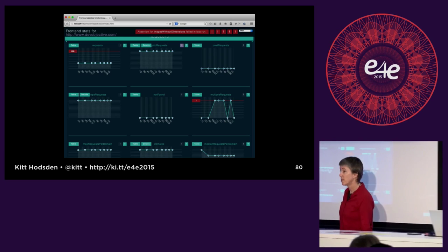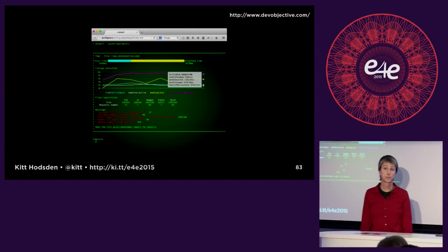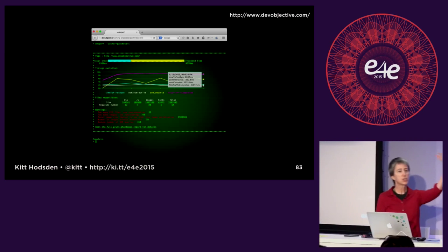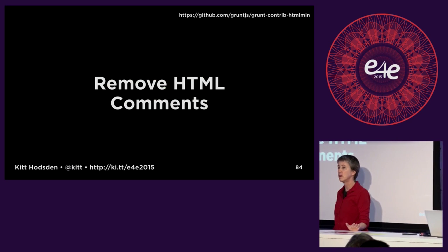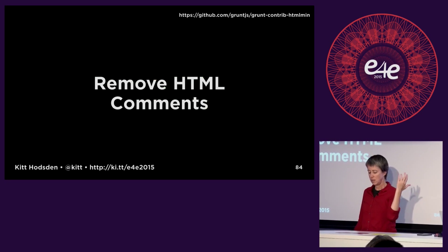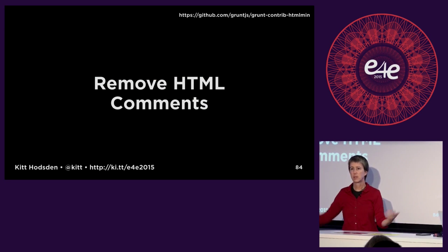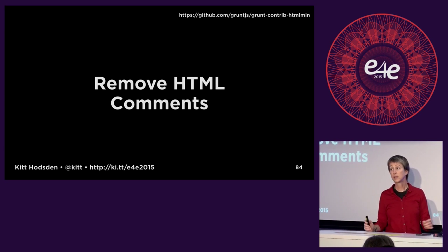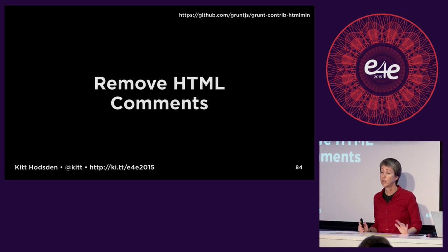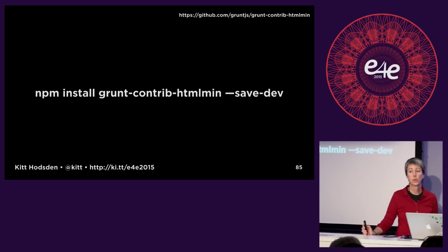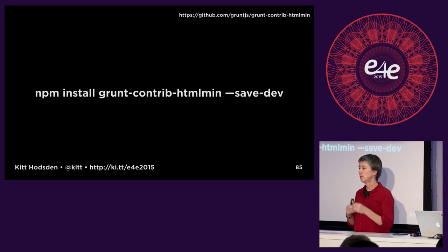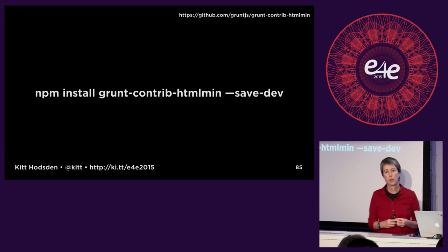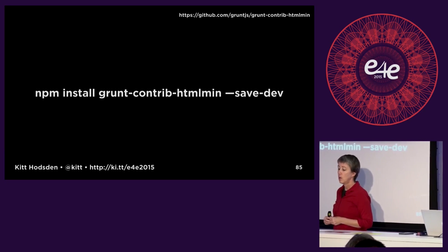Looking at this and seeing what these issues are, we can start with the 'fix this' items at the bottom. The first thing it says is: remove HTML comments. Comments are fantastic during development, but you don't need them in production. So you can remove them — do this in your template files with grunt-contrib-htmlmin, which will also squish them a little and take away some spaces. Any Grunt module that starts with 'contrib' means it is maintained by the Grunt maintainers.